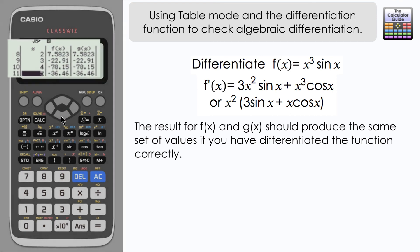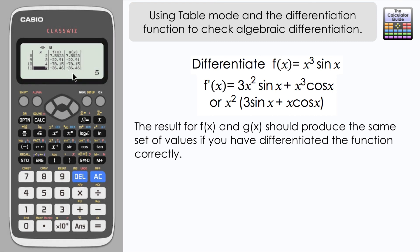So what's happening here is that the table mode is showing us that when the calculator differentiates our original function and compares it with our differentiated function with the values of x from -5 to 5, we're going to get the same results.